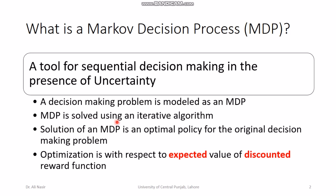These problems can be addressed by using Markov Decision Processes. A decision making problem is modeled as a Markov Decision Process, and then it is solved using an iterative algorithm. Algorithms to solve Markov processes are already developed — the innovation comes when you look at a new problem, develop a Markov process model for it, and solve that process to get the optimal decision making policy.